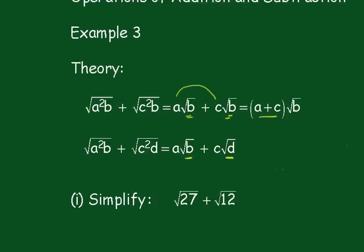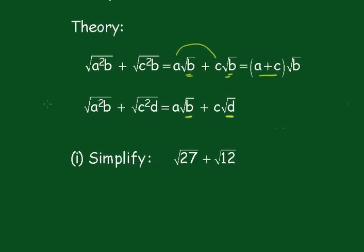So here's an example to do. Now root 27 can be written as the square root of 9 times 3 plus root 12 as 4 times 3, which gives me 3 root 3 plus 2 root 3. Now we can add the 3 and the 2 and we get 5 root 3 as our final answer.